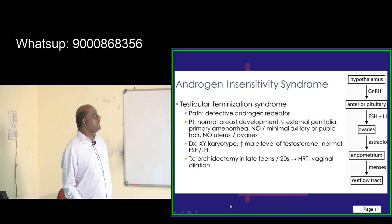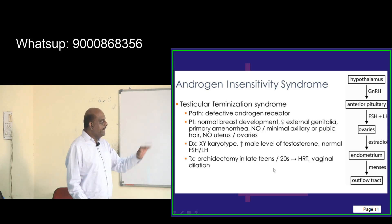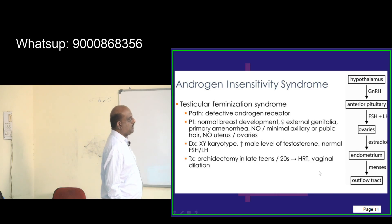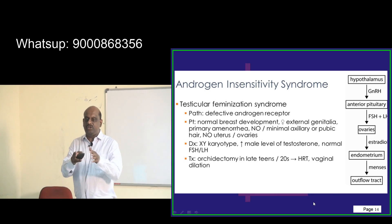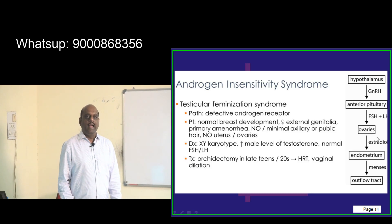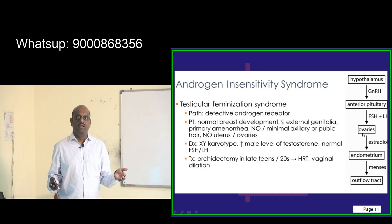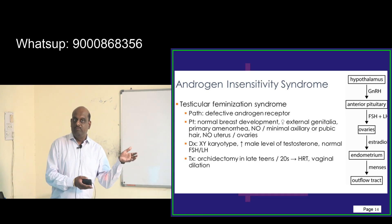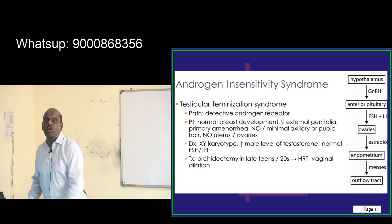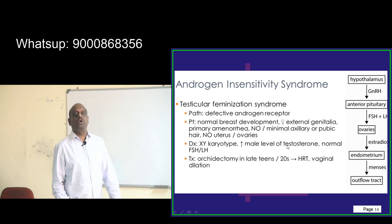Management of androgen insensitivity syndrome involves orchidectomy in the late teens, which is considered the management of choice. This is followed by vaginal dilatation of the blind-ending pouch and hormone replacement therapy. Depending on the patient's sexual orientation — since karyotype is XY — the patient's wishes regarding gender identity need to be honored.